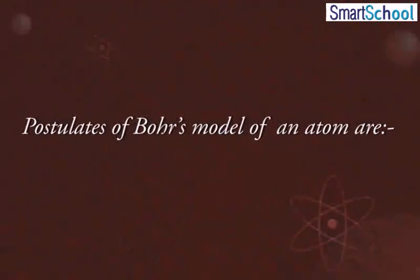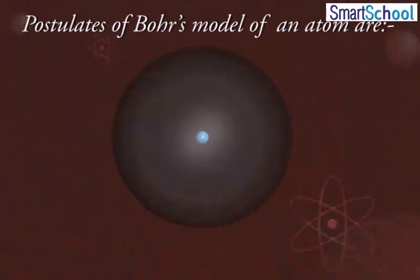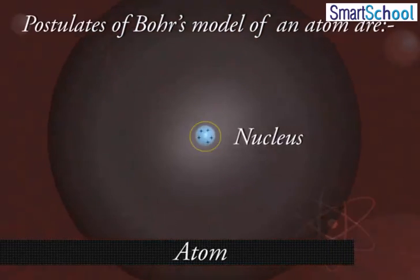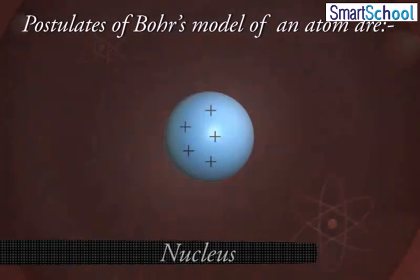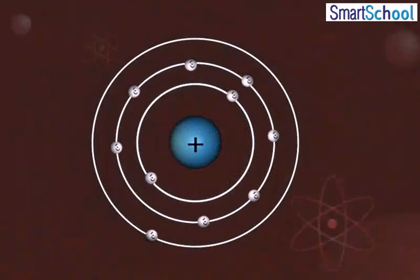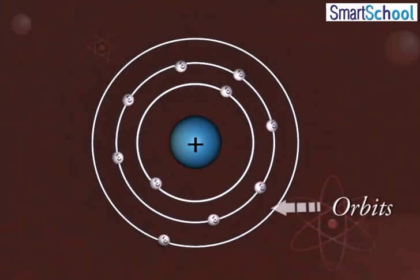Postulates of Bohr's model of an atom are: An atom consists of a small, heavy, positively charged nucleus in the center, and electrons revolve around it in circular paths known as orbits.